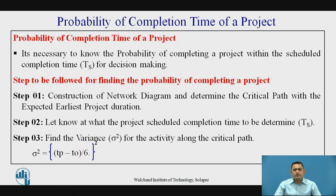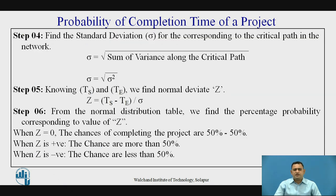Step three: with the help of the overall data of the activities and their durations, calculate the variance using the formula sigma squared = ((tp - to) / 6) squared. Step four: after getting the variance, find the standard deviation for the project using the critical path. The formula is sigma = square root of the sum of variances along the critical path. If there are more than two critical paths, the longest critical path is considered for finding the standard deviation of the overall project.